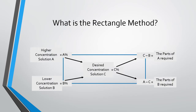What is the rectangular method? You arrange the calculations in a rectangle. On the right-hand side, on one corner, you have your higher concentration solution A and your lower concentration solution B. As you work your way diagonally from left to right, with your desired concentration solution in the middle, you can calculate the parts required of A and the parts required of B.